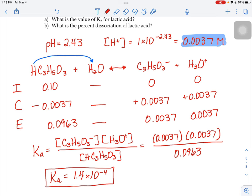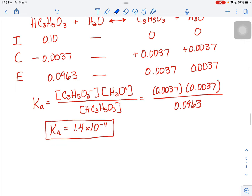For part B, where it asks what's the percent dissociation of lactic acid, it wants to know what percentage of the lactic acid broke up into acetate and hydronium ions. So the way we're going to figure that out for part B, we're going to take the part that turned into hydronium ions at equilibrium and divide it by the original concentration of my acid.